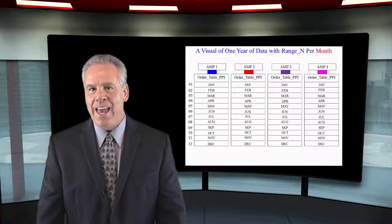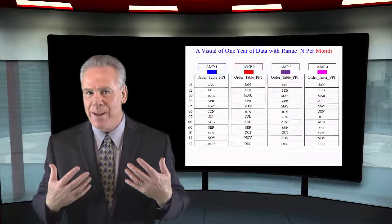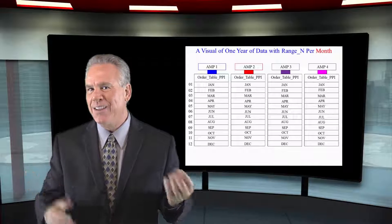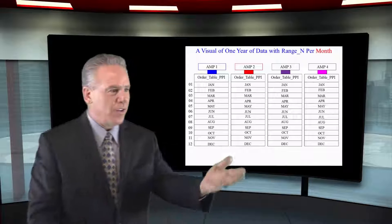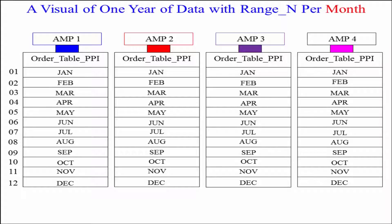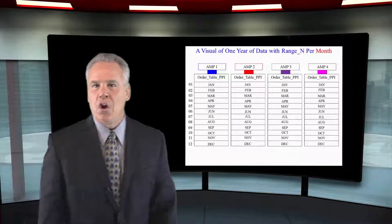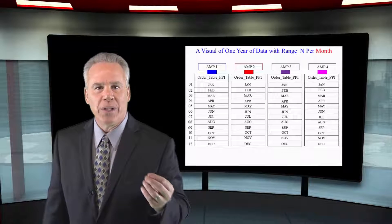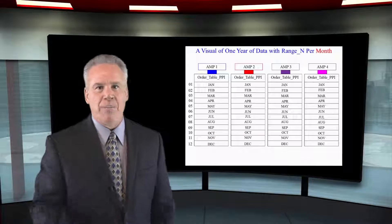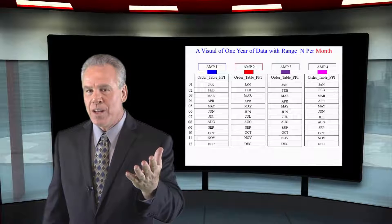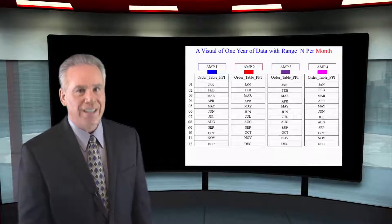Now, each AMP has gotten its rows from this table based on being hashed by the primary index of order number. But when the rows come to the AMP, they're going to sort it by the order date and the month of order date. So they've got 12 partitions in a year, and you can see my partitions are 01 to 12. This is called sorting by the row key. Normal tables sort by the row ID from each row, but you add the partition number in and now you're talking about a row key.